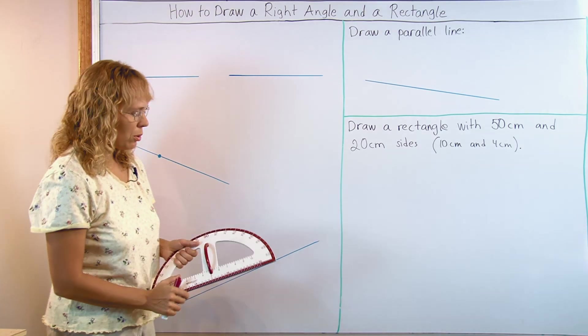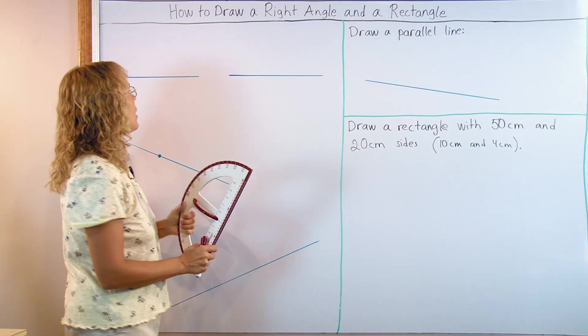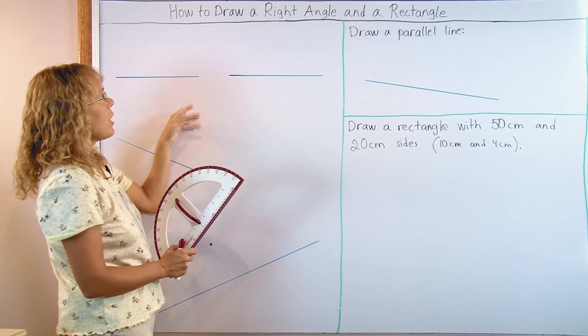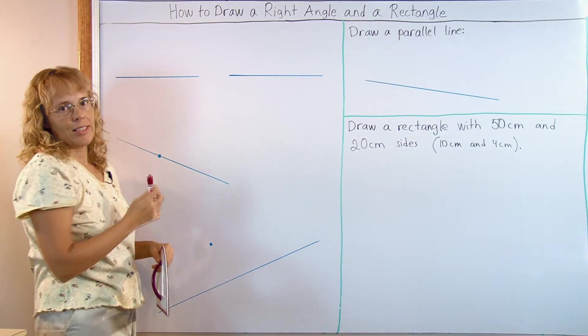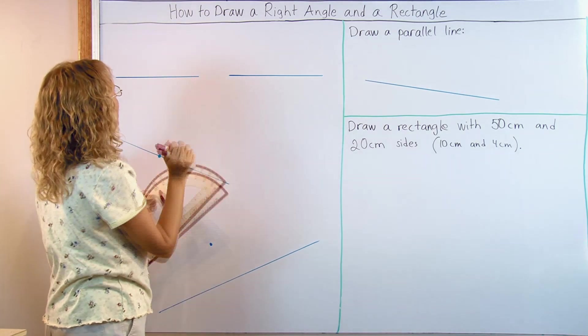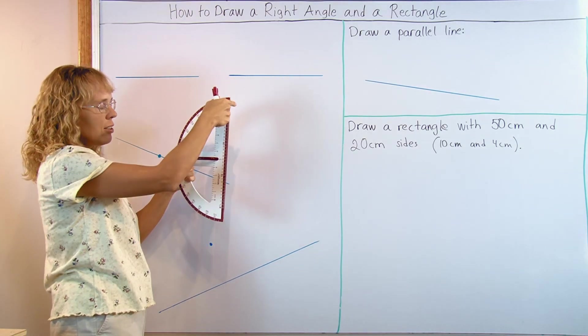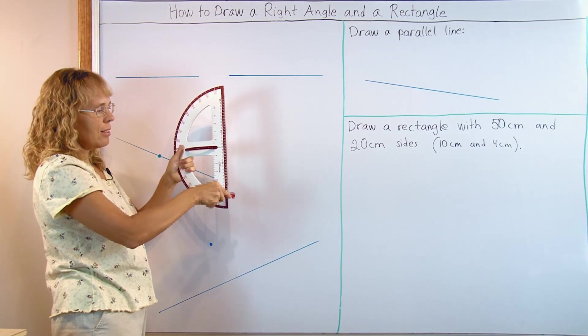You need a tool to do this and I'm going to use a protractor first of all. Let's say here's your line and you need to draw a right angle that goes at a right angle with your existing line. You have to position your protractor so that you're going to draw along this line, this side.